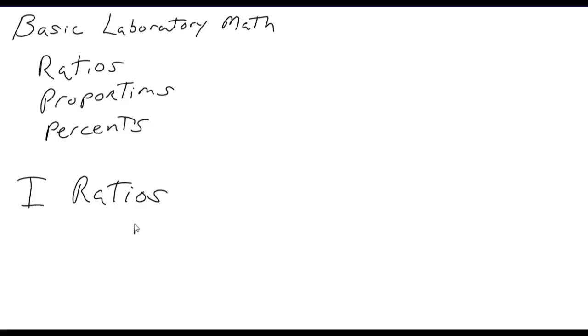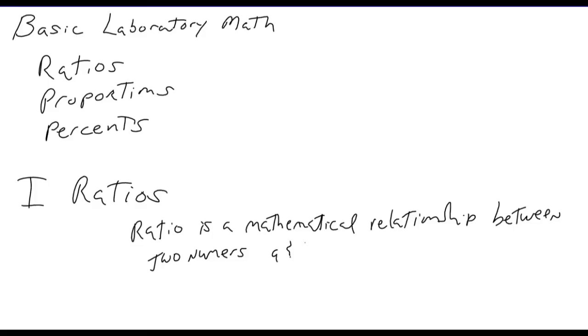The ratio is a mathematical relationship between two numbers. And usually we'll say, if the numbers are, say, A and B, we'll express the ratio as A to B.